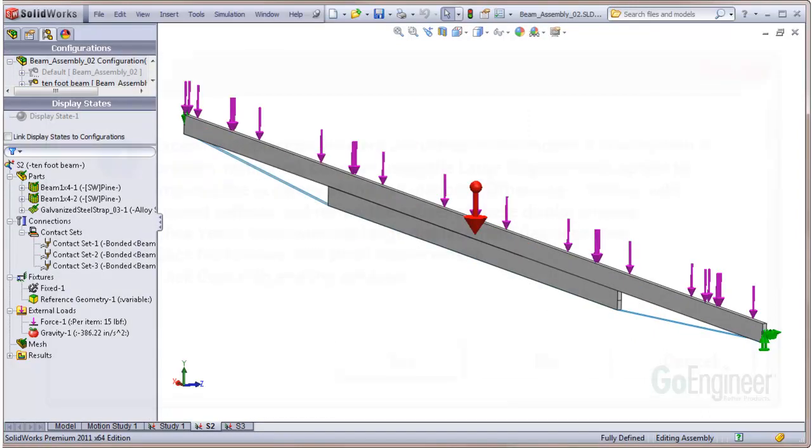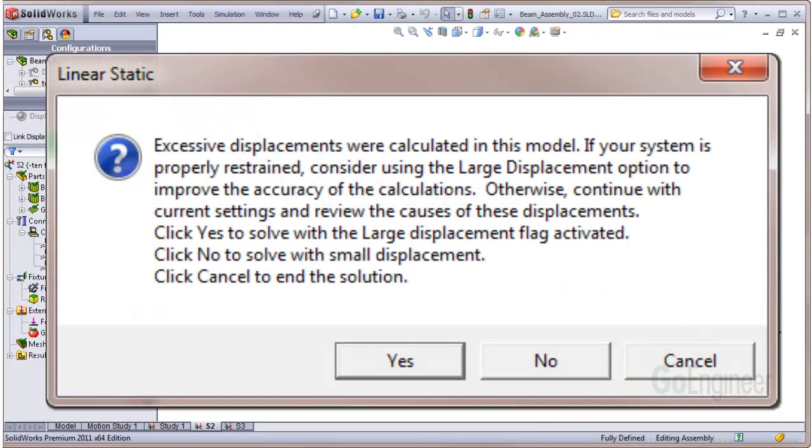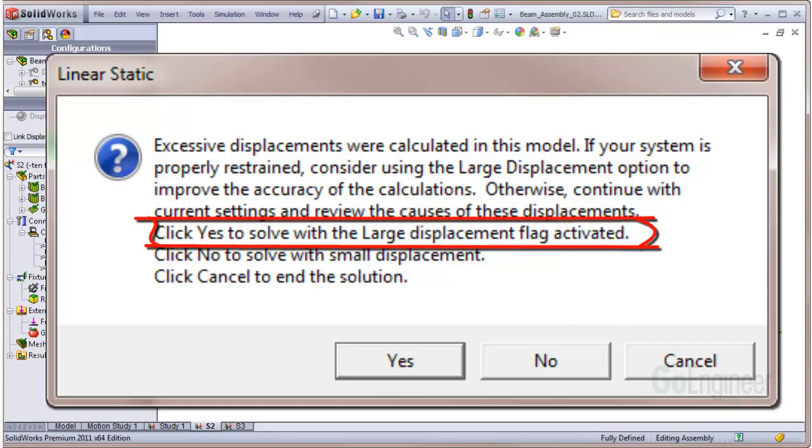So when we run the analysis, we get a dialogue like this talking about excessive displacements and how, assuming the system is properly restrained, you can turn on a flag to solve using the large displacement option.